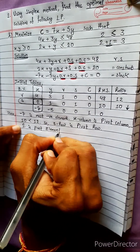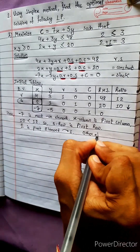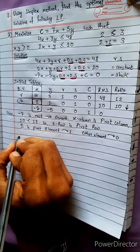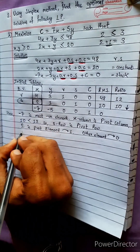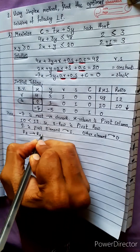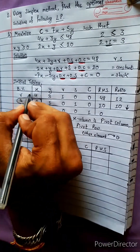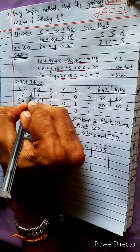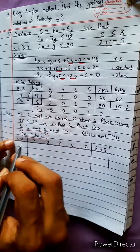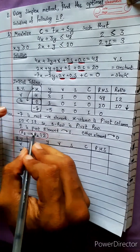We need the pivot element to become 1, and all other elements in the column to be 0. The pivot element is 1. R2 divided by 2 gives 1. X will transfer to row 2, which is the pivot row in the x column.